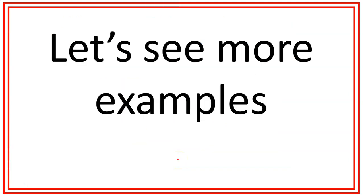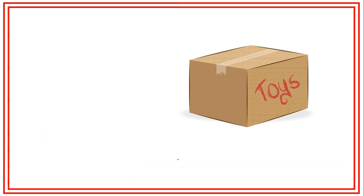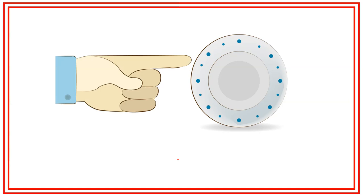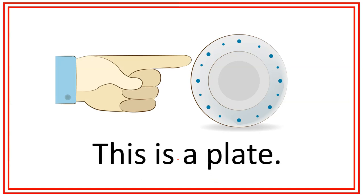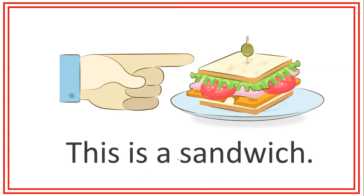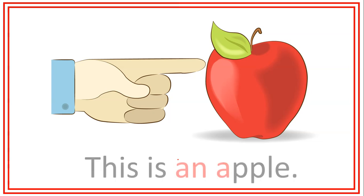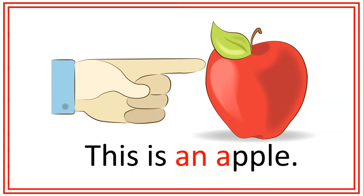Now, let's see some examples. This is a box. This is a plate. This is a sandwich. This is a glass. This is an apple. Now, this is a good example — apple starts with a vowel, so check that we are using an instead of a. Please remember that.